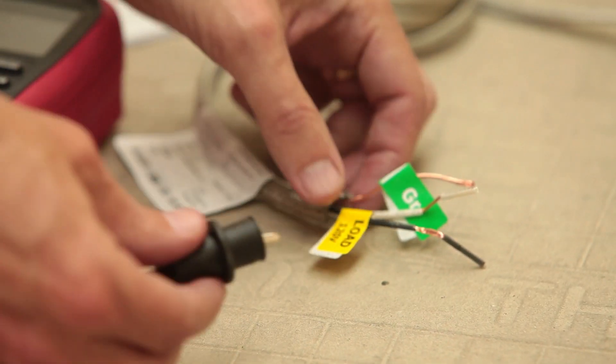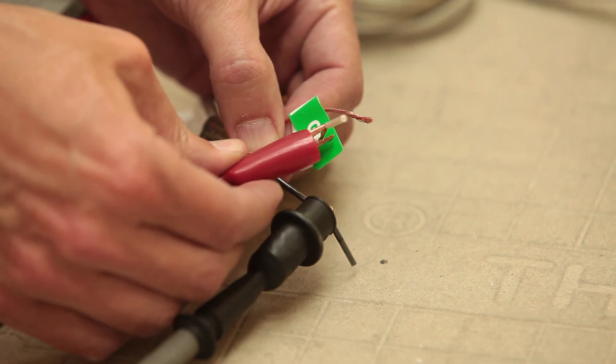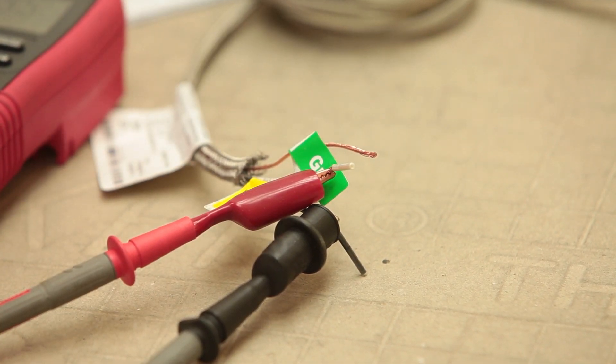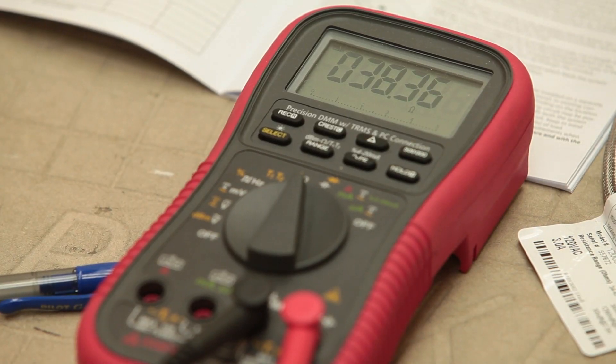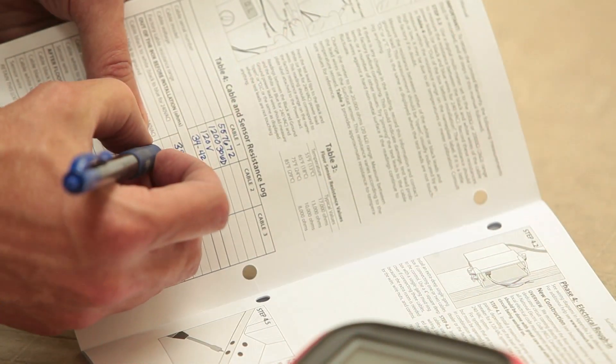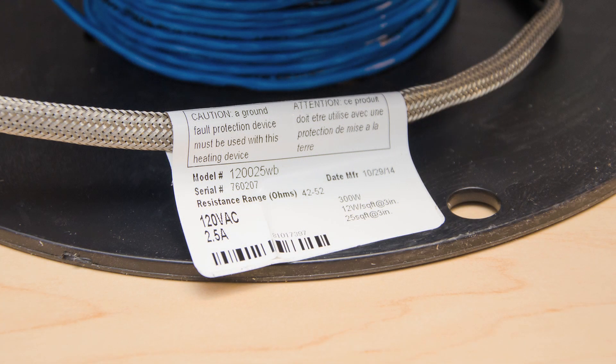Set the electrical meter to the 200 ohm range and measure the readings between the black and white wires. This will be black and blue for the 240 volt WarmWire. Record the ohm reading in the out-of-box before installation table in the installation manual. The number should be within the range printed on the nameplate label.